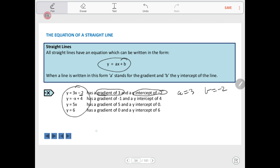So, the gradient is our slope, how steep the line is, and the y-intercept is where the line cuts the y-axis.